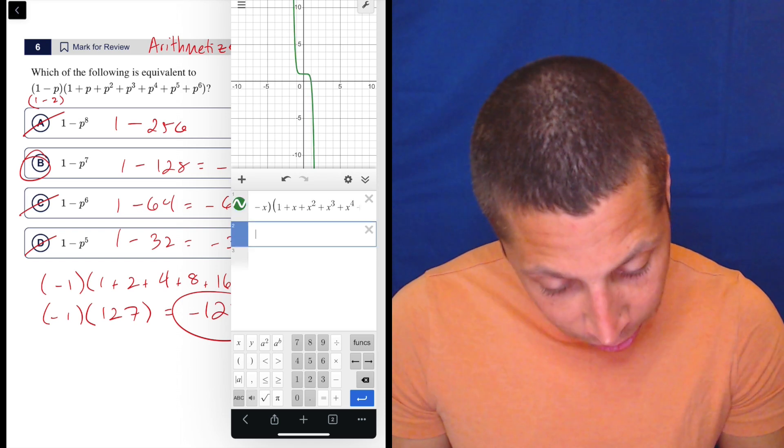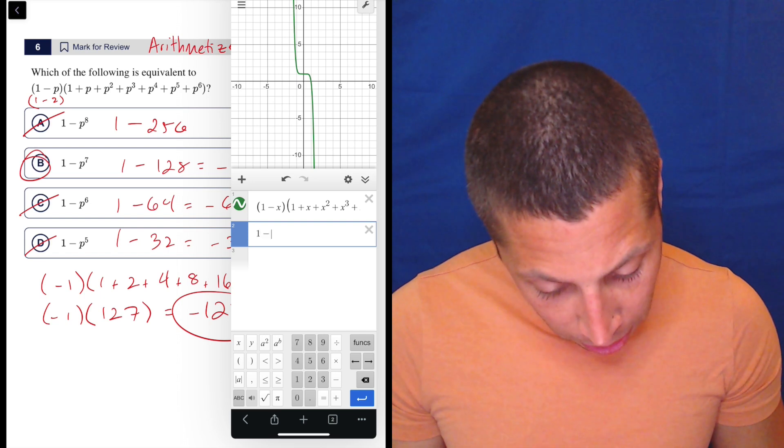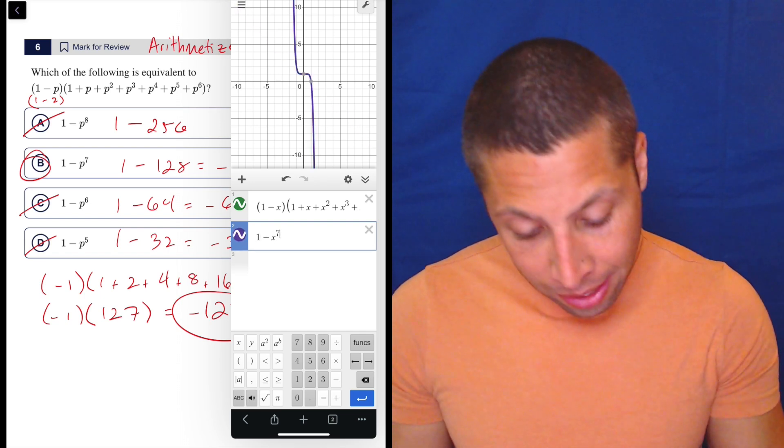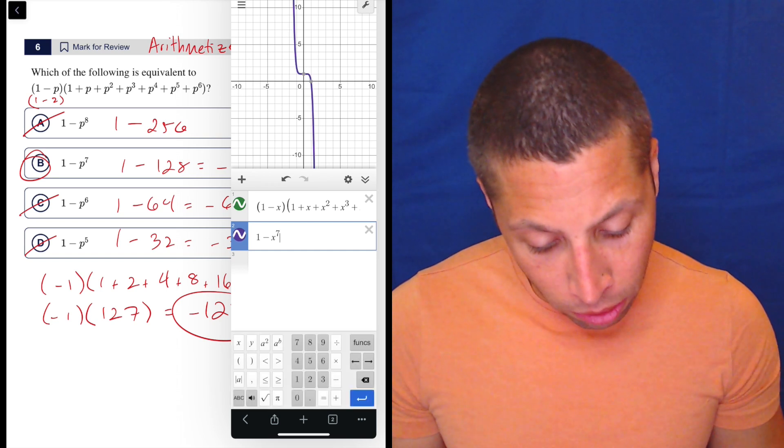Desmos sometimes does things I don't understand. So there you go. That's what it is. And then if we put in the right answer, so one minus x to the seventh, we can see it's the same. Turn that purple on and off, and it overlaps perfectly with the green.